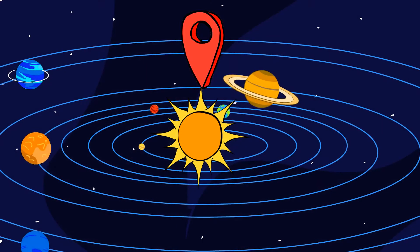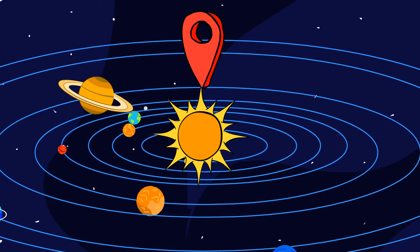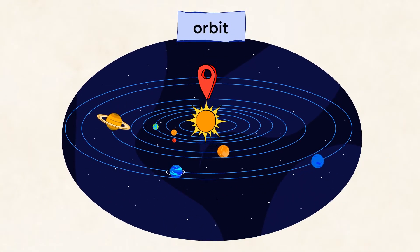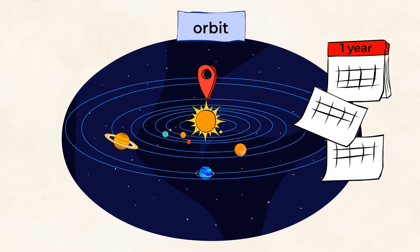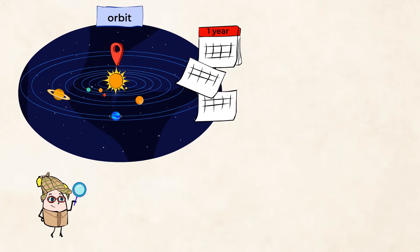It all starts with the sun, the center of our solar system. Earth and the other planets orbit around our sun. That means that they travel around it. It takes one year for the Earth to make its way around the sun. This orbit is how all our weather patterns begin.